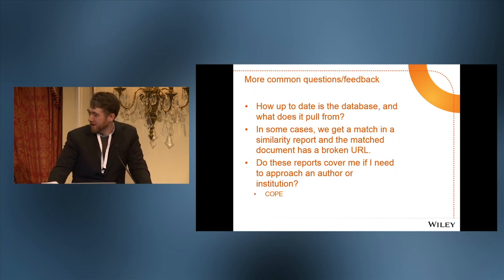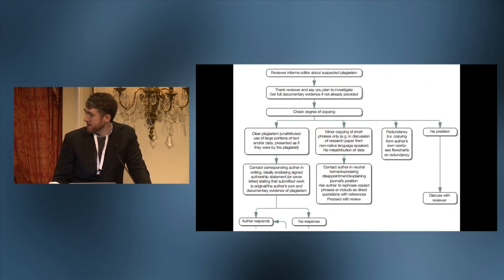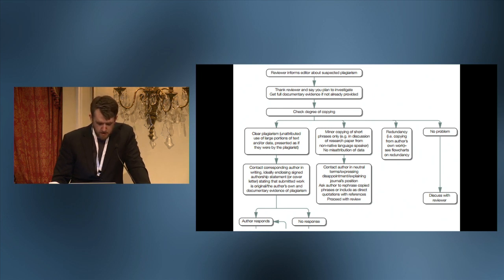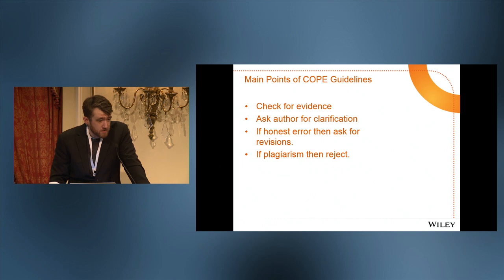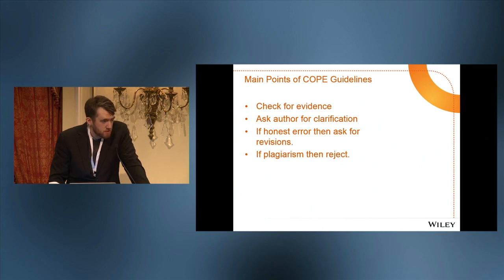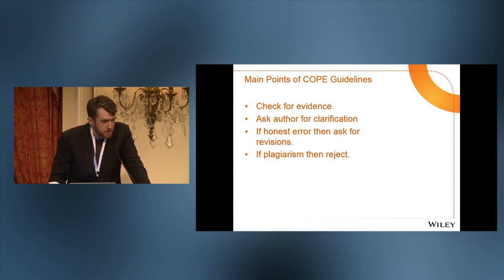Wiley partners with COPE. COPE has fantastically detailed flow charts that are up for free on their website, and we definitely prescribe using those. The common-sense points of the COPE guidelines: check for evidence, ask the author for clarification. Self-plagiarism does seem to be what we see most often — in a lot of cases authors plead ignorance, saying they just didn't know they had to cite their own manuscript. If it's an honest error, ask them for revisions. But if it is plagiarism, reject or take it forward with the author's institution or institutional review board.